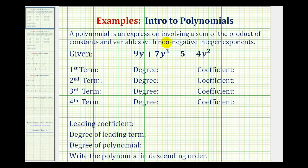A polynomial is an expression involving a sum of the product of constants and variables with non-negative integer exponents. An example of a polynomial would be 9y plus 7y to the third minus five minus 4y squared.